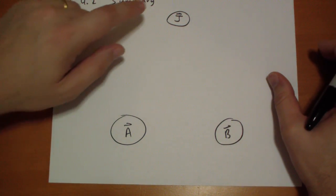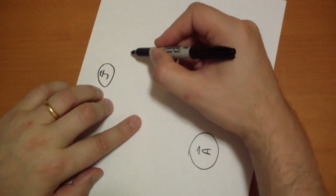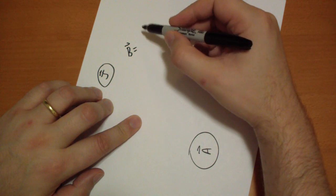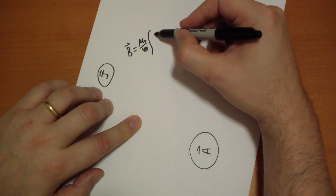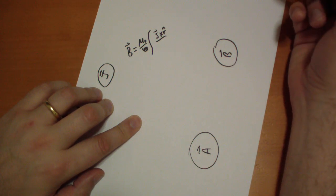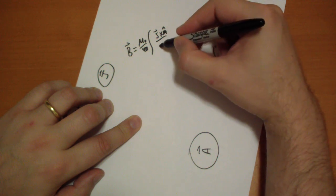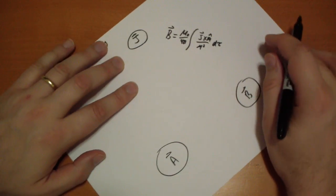Okay, if we have a J vector, how do we get our B vector? So our B vector is equal to mu naught over 4 pi of the integral of J vector cross r hat over r squared d tau. Okay? You should know that formula.